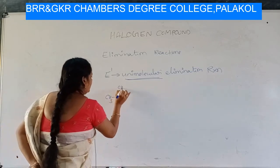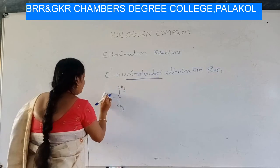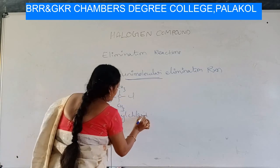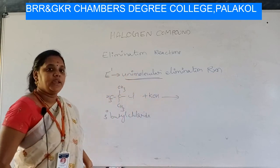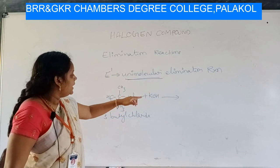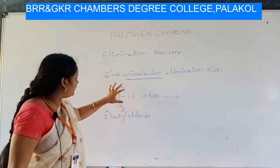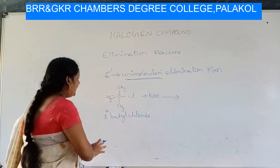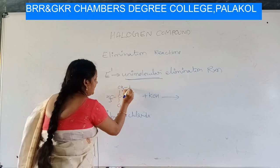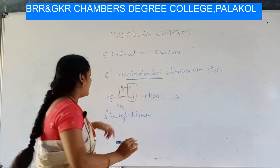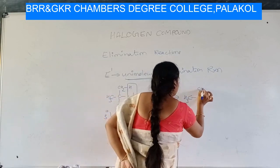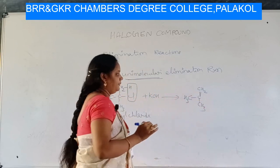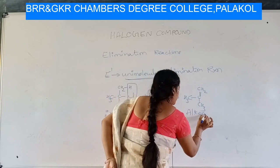For example, if you take tertiary butyl chloride and treat it with KOH, hydrogen from one of the three methyl groups and chlorine are eliminated. Writing it out: HCl is removed and you get CH₃C=CH₂·CH₃ — an alkene. The single bond is converted to a double bond.